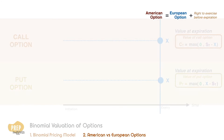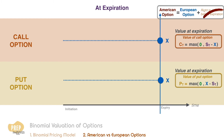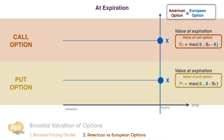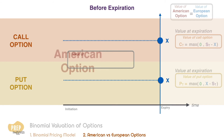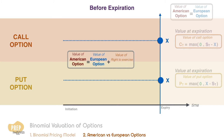At expiration, the right to exercise before the expiration date obviously becomes of no value. Therefore, both types of options are equivalent and will have the same value at expiration. Before expiration, the prices of European and American options will be equal unless the right to exercise prior to expiration has positive value. In theory, this value can never be negative, because an American option can never have a lower value than its European counterpart — an American option holder can always choose not to exercise until the expiration date.